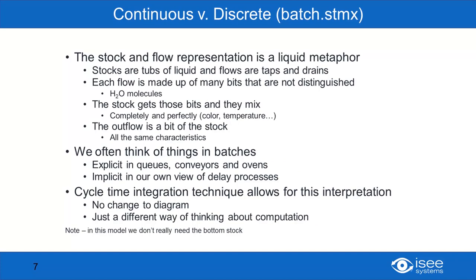I want to start out by talking about continuous versus discrete — this is really a conceptual overview of how we think about those two things. A stock and flow representation is a liquid metaphor, a continuous representation. Stocks are tubs of liquids and flows are taps and drains. Since it's liquid we're talking about, it is infinitely divisible — beyond all normal measurement. Each flow is made up of bits that are really not distinguished from another. Think of water as just a bunch of H2O molecules; we don't care what any of them looks like — it's the quantity that matters.